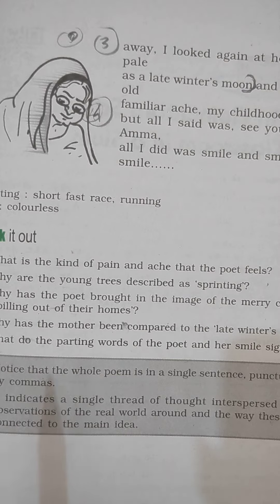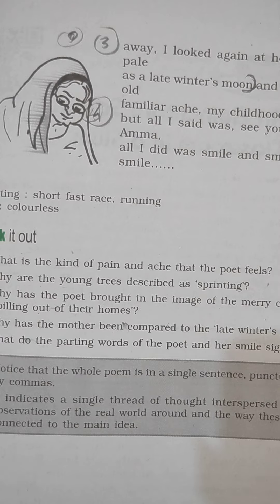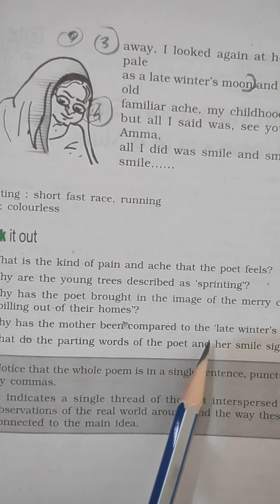Question number three: Why has the poet brought in the image of merry children spilling out of their homes? Answer: The poet has used this imagery to bring out the contrast between children who are energetic and full of life and a mother who is old, pale, and lifeless.